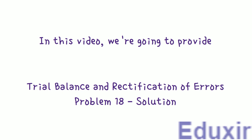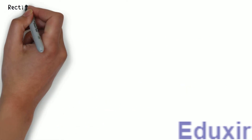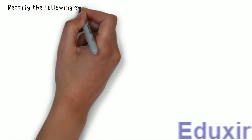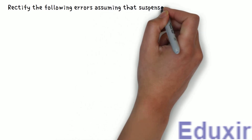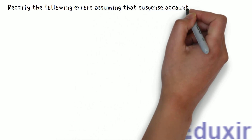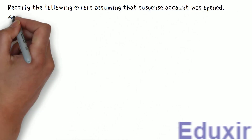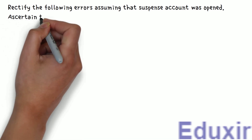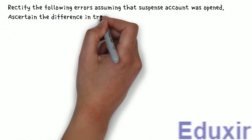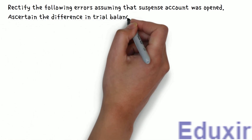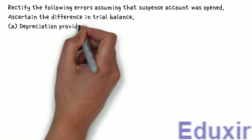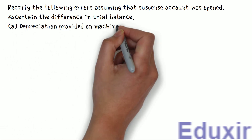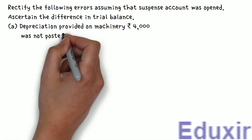The problem statement is as follows: Rectify the following errors assuming that a Suspense Account was opened. Ascertain the difference in trial balance. A: Depreciation provided on machinery, 4000 rupees, was not posted to Depreciation Account.